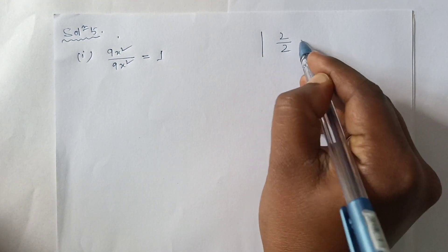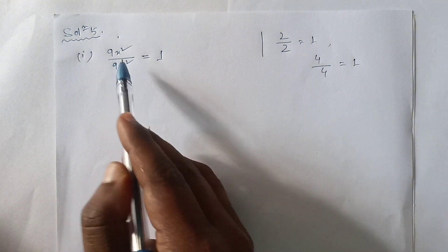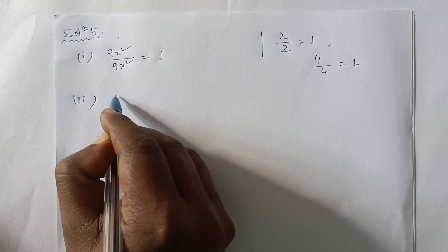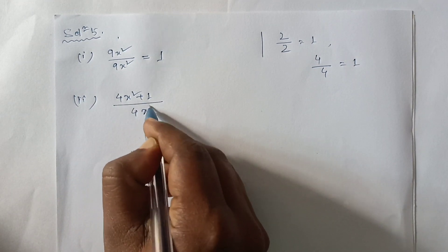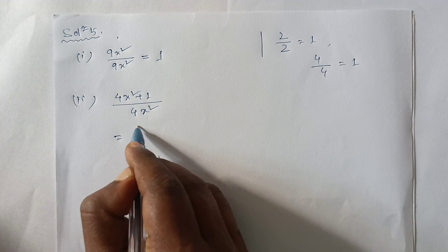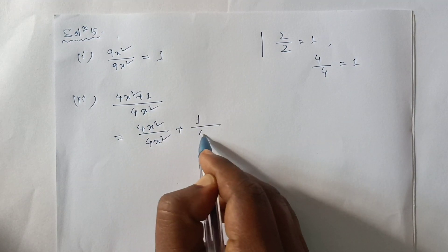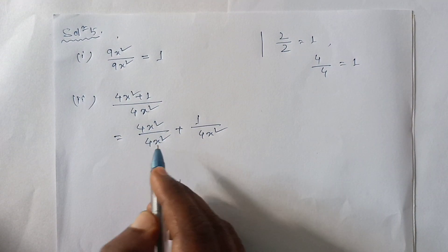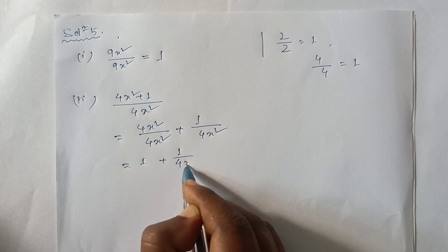2 by 2, 1 by 2. 9x² by 9x², 1 by 2, 2 by 2, 4x² plus 1. 4x² plus 1 divided by 4x². 1 plus 1 equals 2. 5x² by 4x², 4x² by 4x², 1 by 4x². 1 by 4x², 2 by 4x². This is the one.